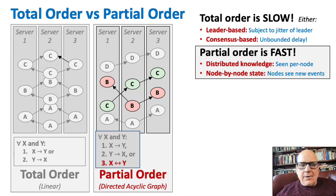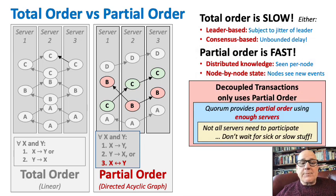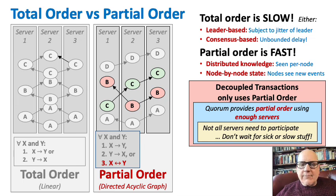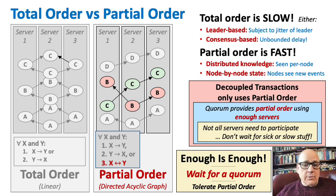You can see this here: on server one, C was before B, but on servers two and three, B is before C — and that's partial order. Decoupled transactions only uses partial order. Quorum provides partial order using enough servers; not all servers need to participate. You don't wait for sick or slow nodes. Enough is enough — you wait for a quorum and you tolerate partial order.